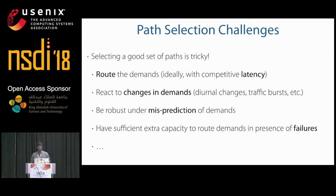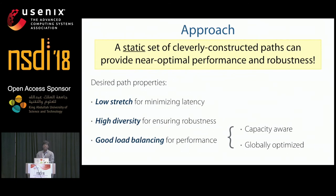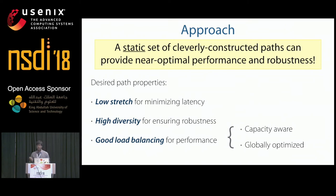How should we select these paths? Selecting a good set of forwarding paths is tricky because once installed we are committed to them, and they must enable various objectives in a dynamic setting. These paths must provide the ability to route traffic with competitive latency, flexibility to react to demand changes, robustness to demand misprediction, and resilience to failures. Our main thesis is that a static set of cleverly constructed paths can provide near-optimal performance and extremely good robustness. Specifically, the path selection algorithm should select low-stretch paths, ensure diversity to reroute around failures, and be capacity-aware and globally optimized for good load balancing.